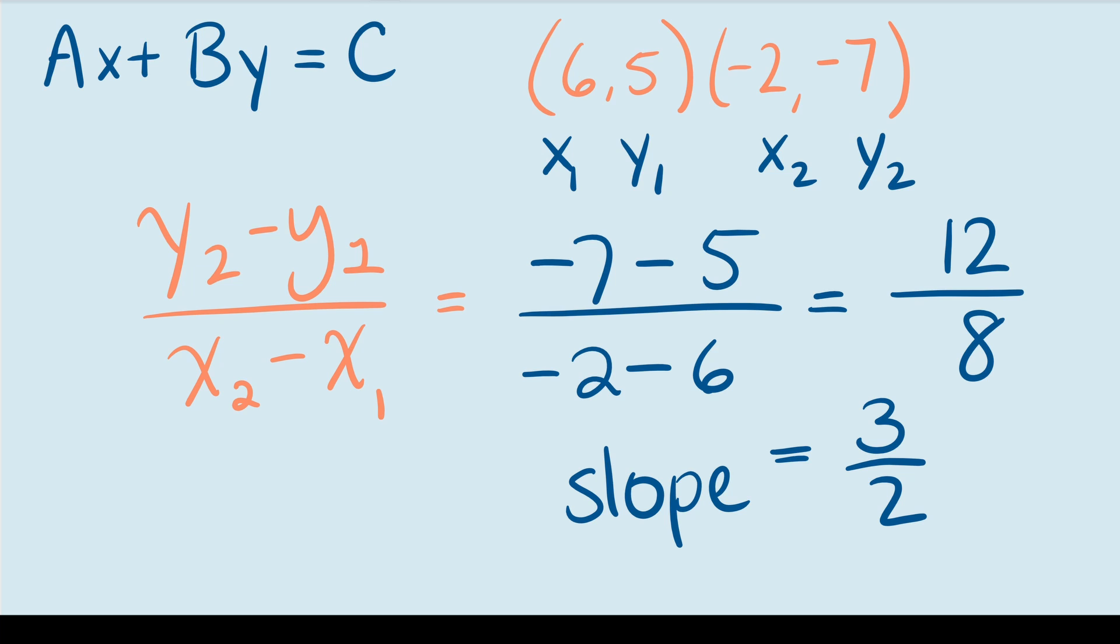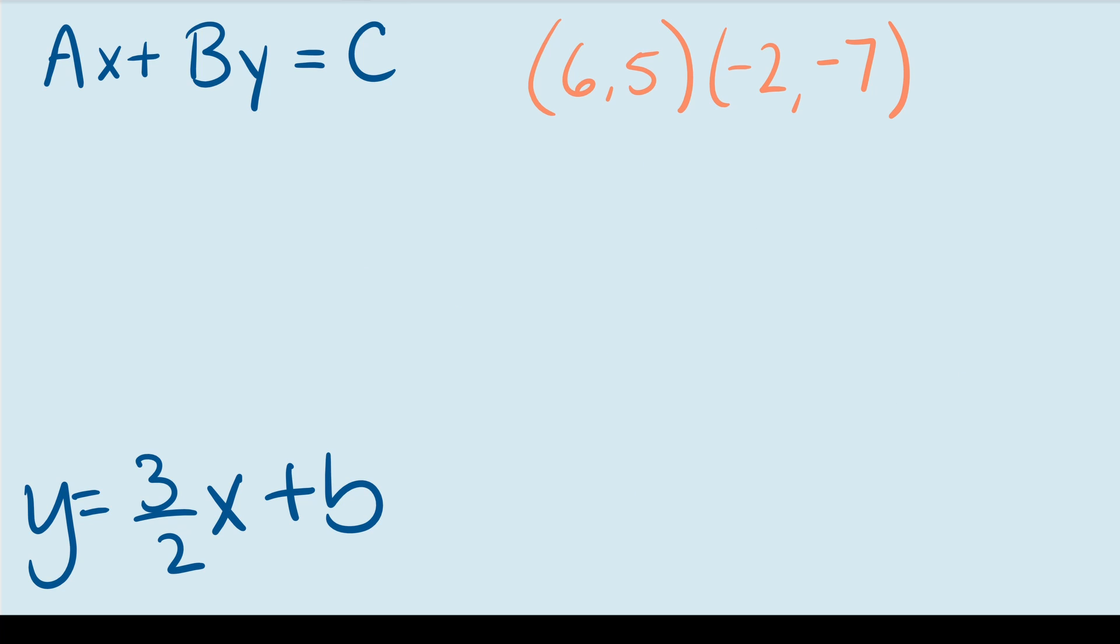Notice that it's a fraction. Now, if we were writing our linear equation in slope intercept form, so far, we would have y equals 3 over 2 times x and then a plus b and we would try to figure out the plus b. We can do this really quickly by simply plugging in an ordered pair.